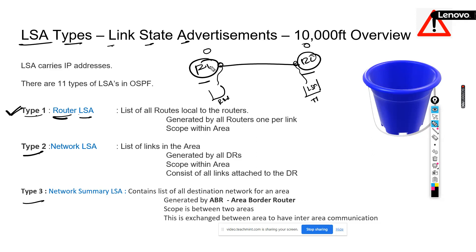R1 will generate one Router LSA. R2 will generate one Router LSA. So in this link, how many LSAs do we have? Two Type 1 LSAs. What if we have one more router? Then we will have three. Each router generates a Router LSA, one per link.